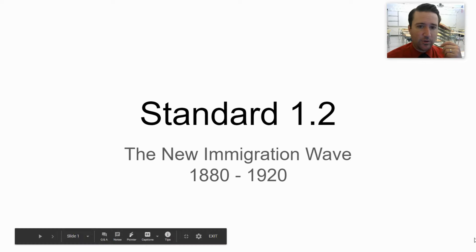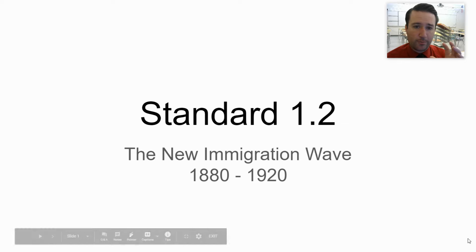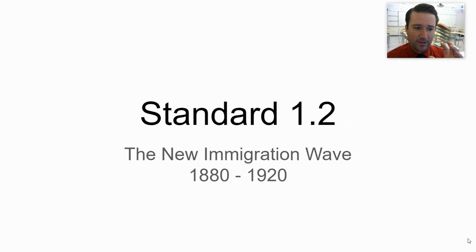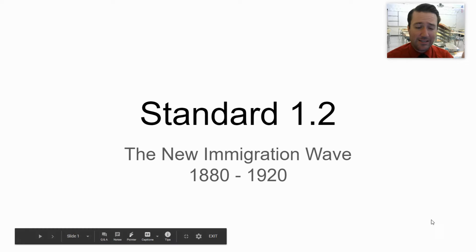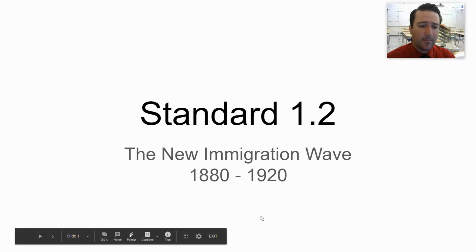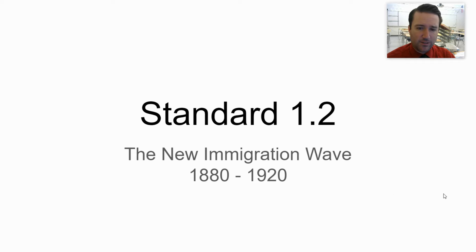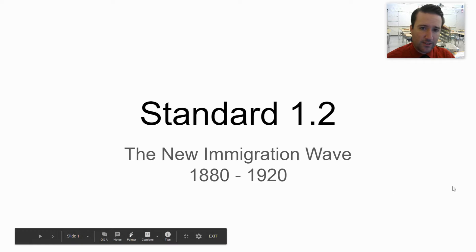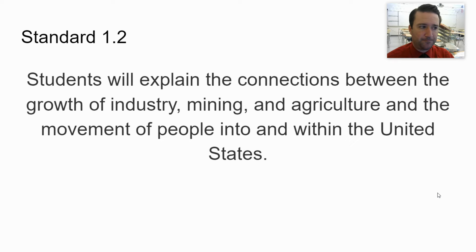Today we're going to talk about the second wave, called the new immigration wave, occurring roughly from the 1880s to the 1920s. This major wave of immigrants finds its way into the United States right as we're talking about the Second Industrial Revolution.